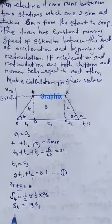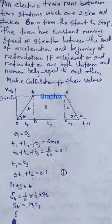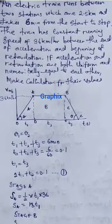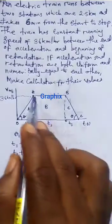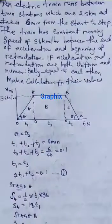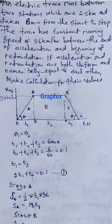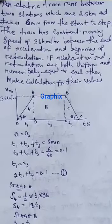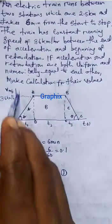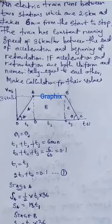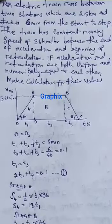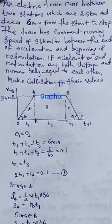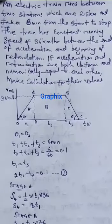We go to Stage B. SB is equal to a rectangle, so it will be the length, which is T2, times the breadth, which is 36 km. So my SB is equal to 36T2.